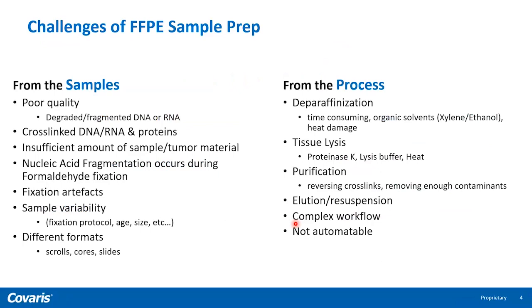FFPE samples are difficult to process due to poor quality of source material that often contains degraded and fragmented DNA and RNA. Formaldehyde used reacts with proteins and highly cross-links RNA and DNA. There is no standardized workflow between institutions for embedding tissues, which results in further variability. In addition, all current traditional methods use organic solvent-based deparaffinization that is laborious, time-consuming, and must be done in protective hoods. The overall workflow is thereby very complex and cannot be automated.